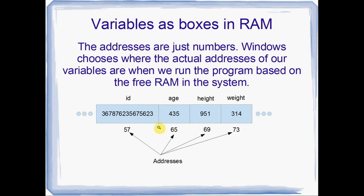The addresses are just numbers. You usually wouldn't have 57, 65, 69 and 73 — these are way too small. These addresses will be used by Windows for something else. But when we run our program, each of the variables will be given an address. When the computer is actually running our program, it's got to put the variable somewhere in RAM, and each of those spots it chooses is going to have an address.